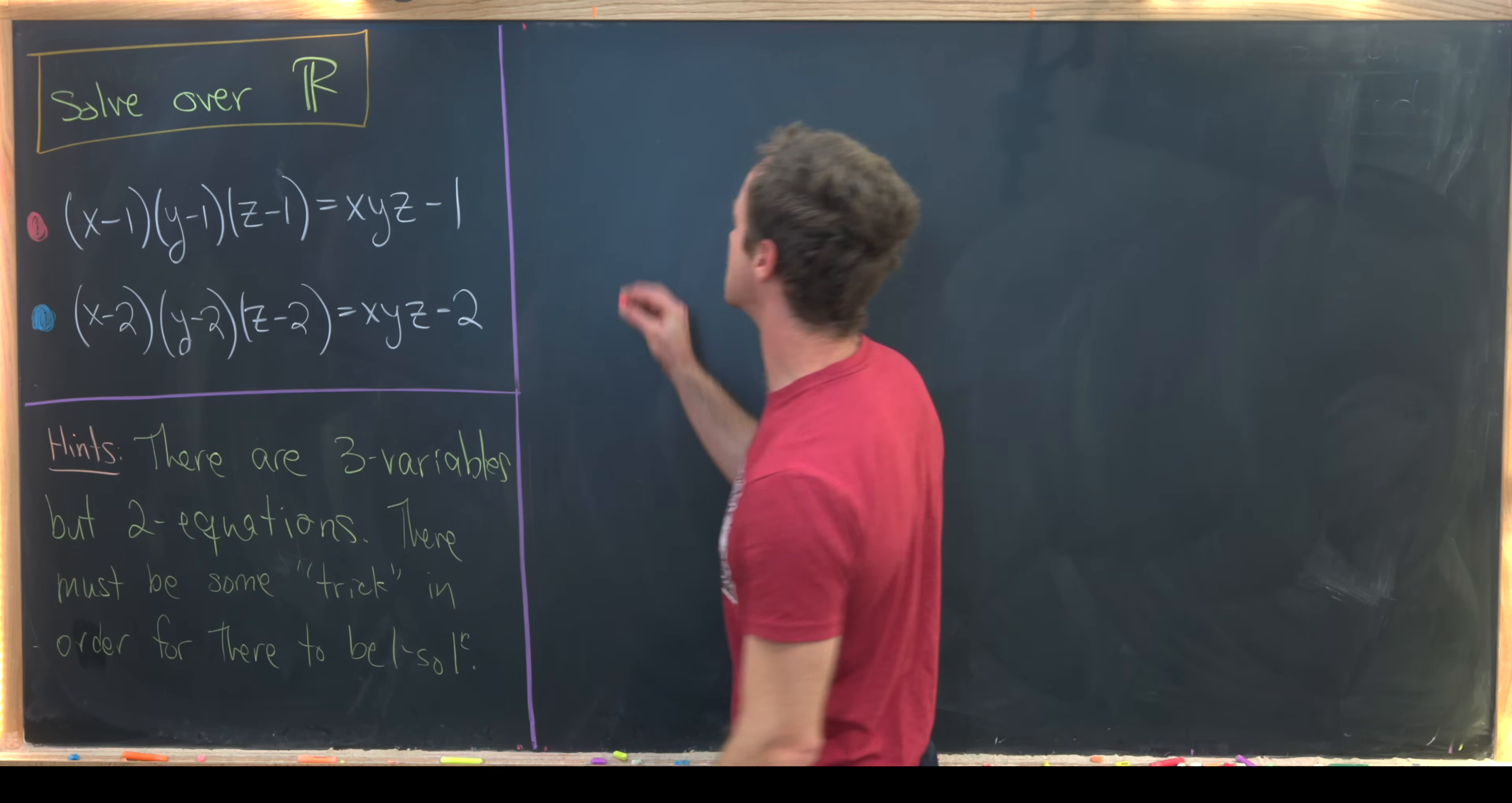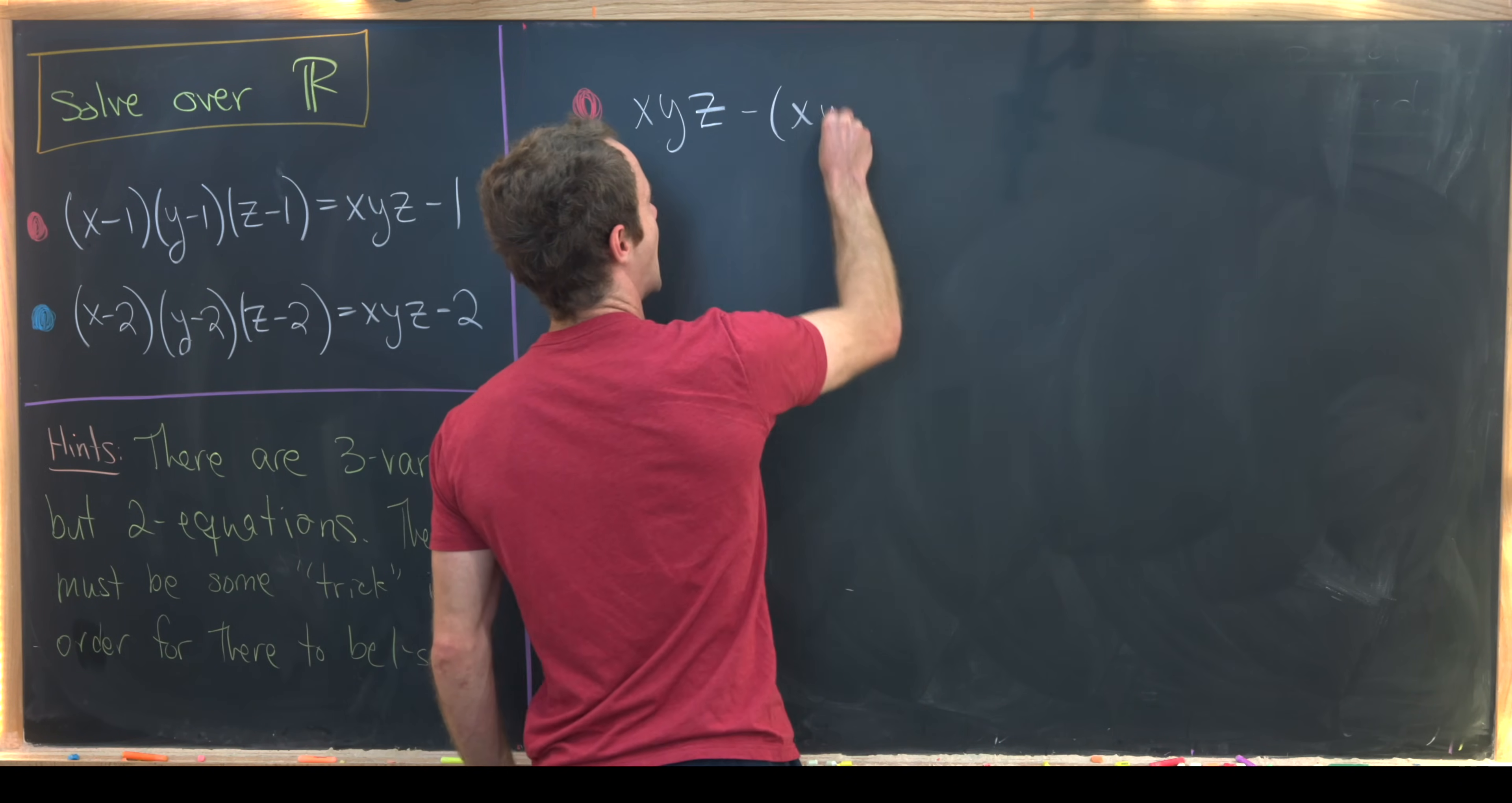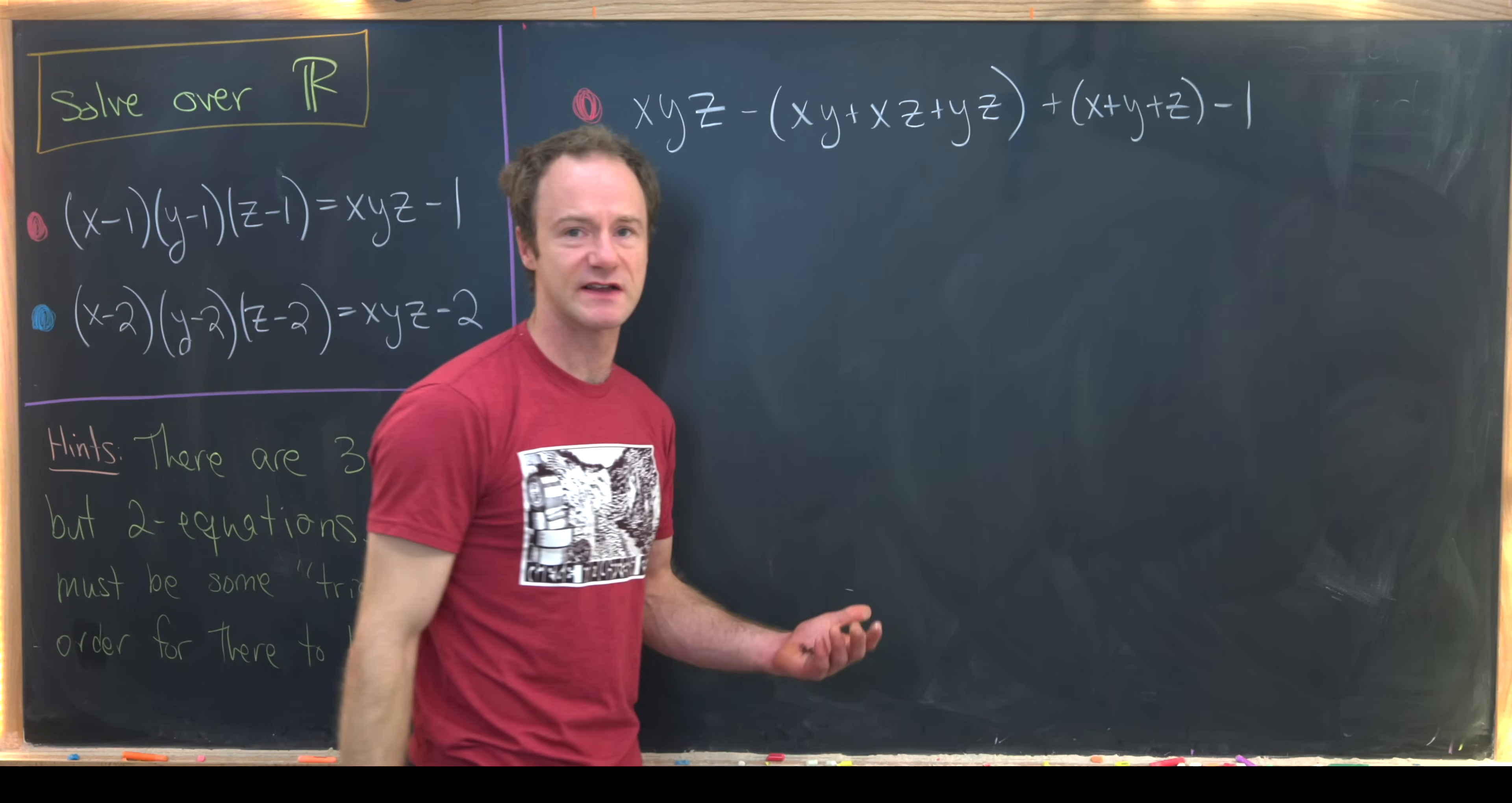Let's jump into this starting with this red dot equation. I'm going to multiply out the left-hand side. We'll get xyz - xy + xz + yz, from taking one copy of the negative 1 and then two copies of each variable. And then we'll have + x + y + z and then - 1.